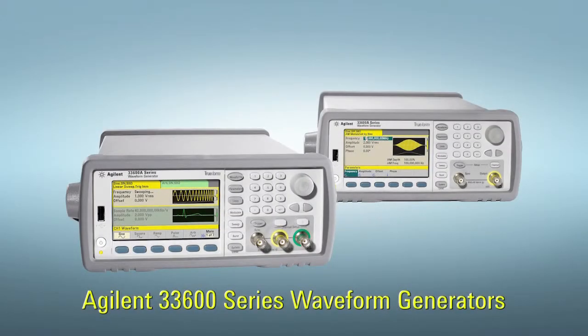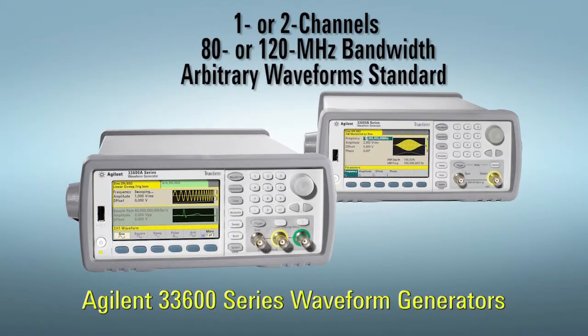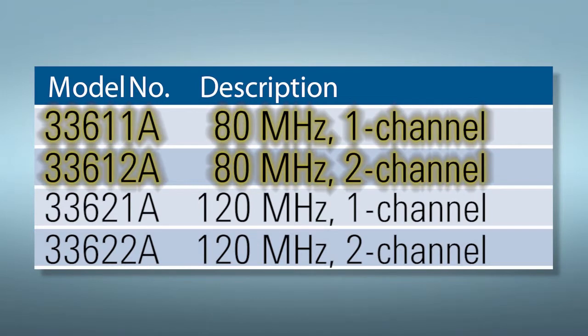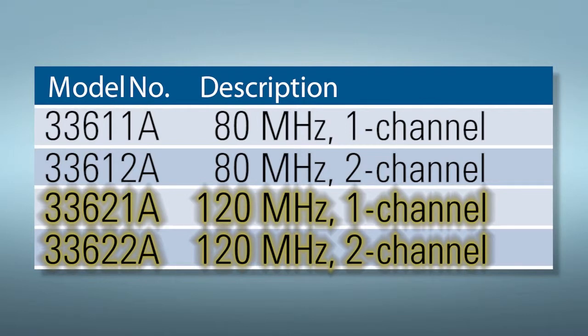The 33600 generators are available in one or two channel versions, with 80 or 120 megahertz output bandwidth. Arbitrary waveform capability is standard on all four models. You can get the performance level you need now, then upgrade your generator in the future from 80 megahertz to 120 megahertz if your bandwidth requirements change.